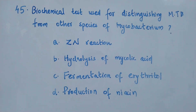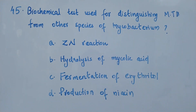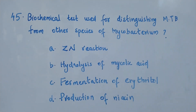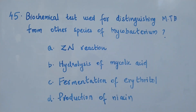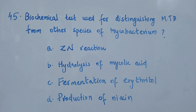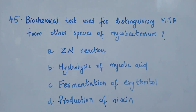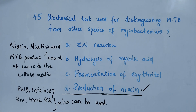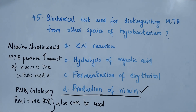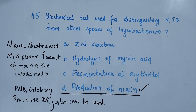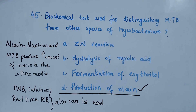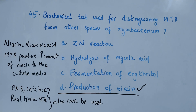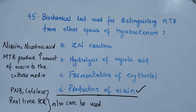Question number 45. Biochemical test used for distinguishing Mycobacterium tuberculosis from other species of Mycobacterium. Option A: Ziehl-Neelsen reaction. Option B: hydrolysis of mycolic acid. Option C: fermentation of erythritol. Option D: production of niacin. Niacin is otherwise known as nicotinic acid. The biochemical test used for distinguishing M. tuberculosis from other species is production of niacin. We can also use PNB, catalase, and real-time PCR for differentiation.